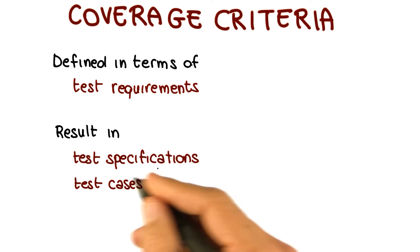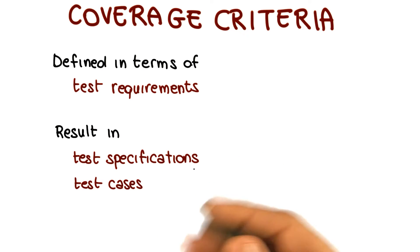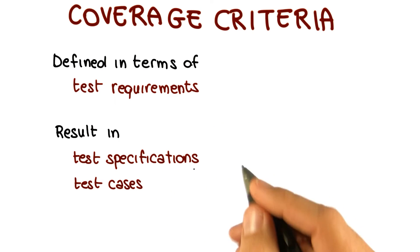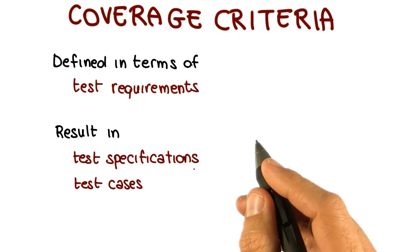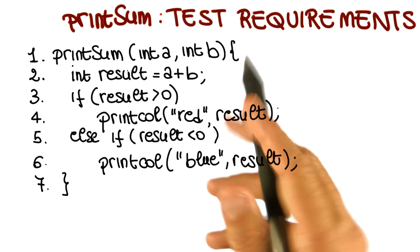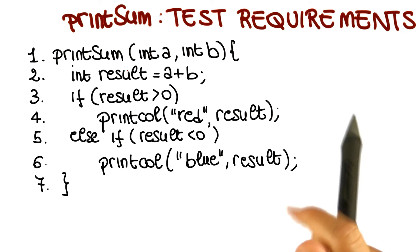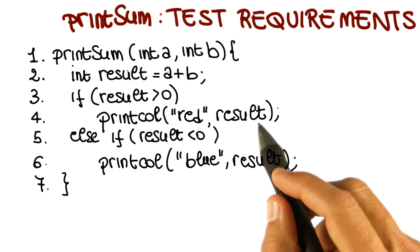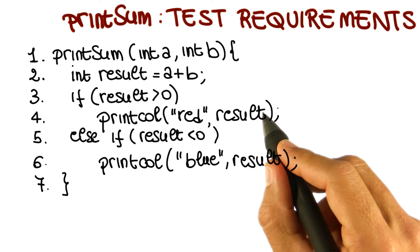And again, this is exactly analogous to what we saw when we were talking about black box testing. So let's see what this means by going back to our example. A minute ago, we looked at the printSum code, and we identified two interesting cases for our code. And those are exactly our test requirements.